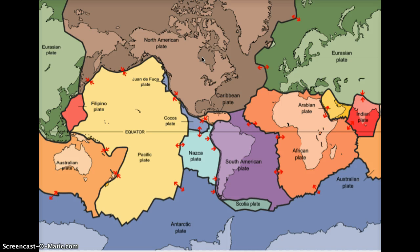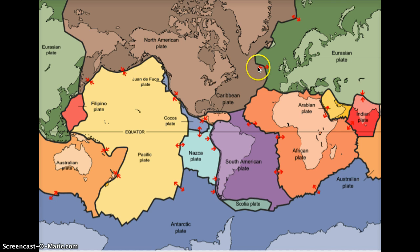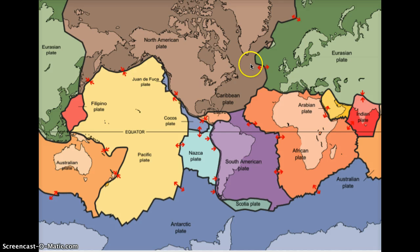Some questions that students have involve trying to understand where the edges of the plates are and how the plates can be moving in different directions at different places. If we take a look at the boundary between the North American plate and the Eurasian plate, we can see this is right in the middle of the Atlantic Ocean. We have oceanic crust here, and the arrows are moving away from each other — so this is a divergent plate boundary. Keep in mind that these plates are moving on a curved surface, not a flat map like we're looking at here.